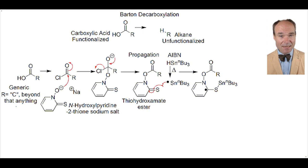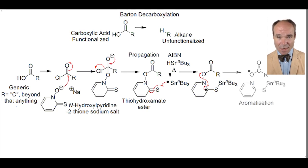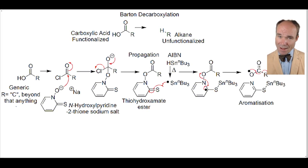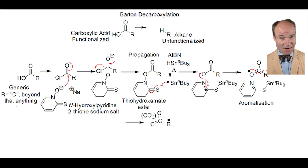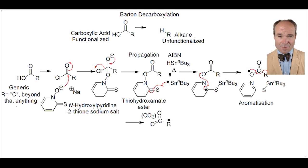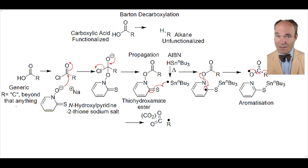Next, the six-membered ring aromatizes, providing it with extra stability, releasing the carbonyl radical that rapidly reacts to give carbon dioxide gas. Here it's drawn bent to keep the atoms in the same location, but in fact it's linear, providing an alkyl radical. The thiohydroxamate ester provides a perfect storm of chemical motivations to become the alkyl radical.